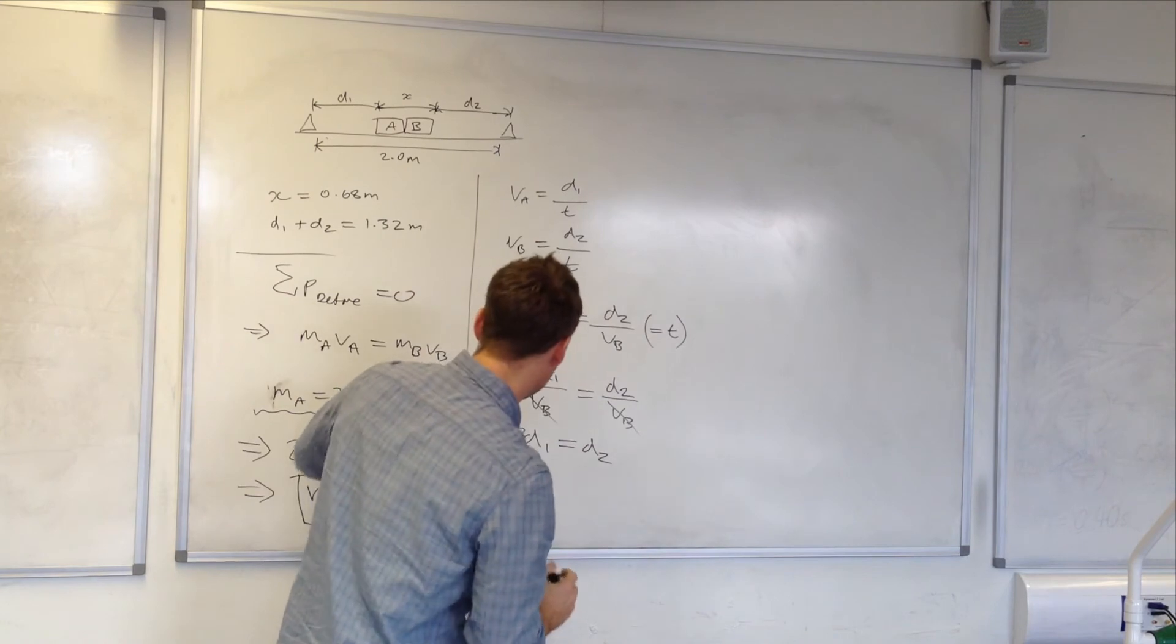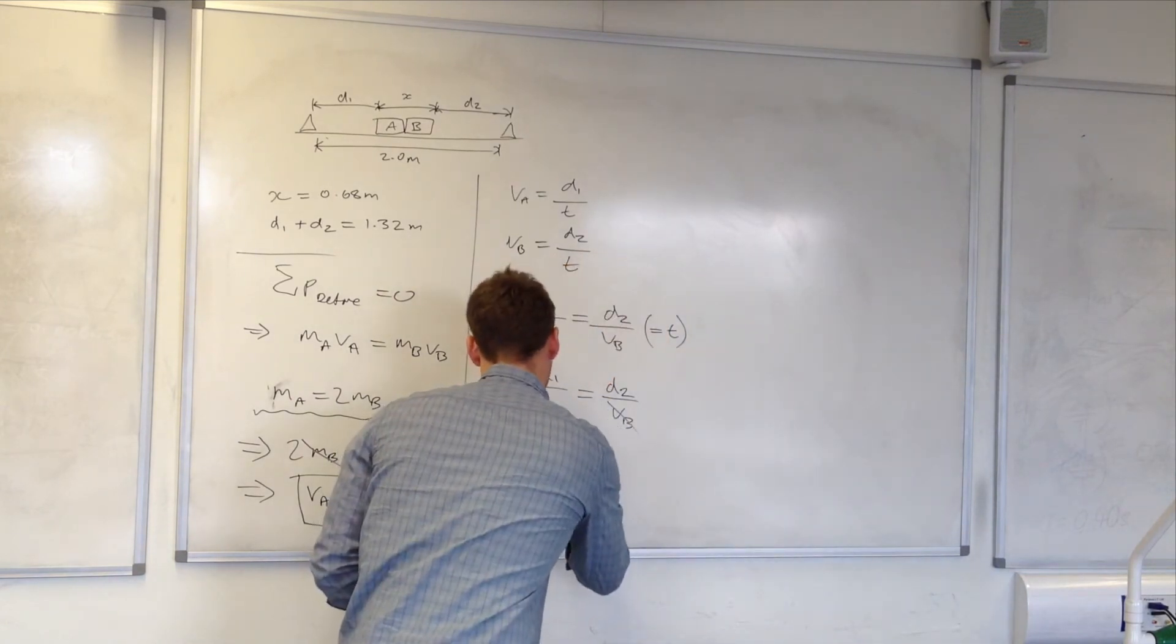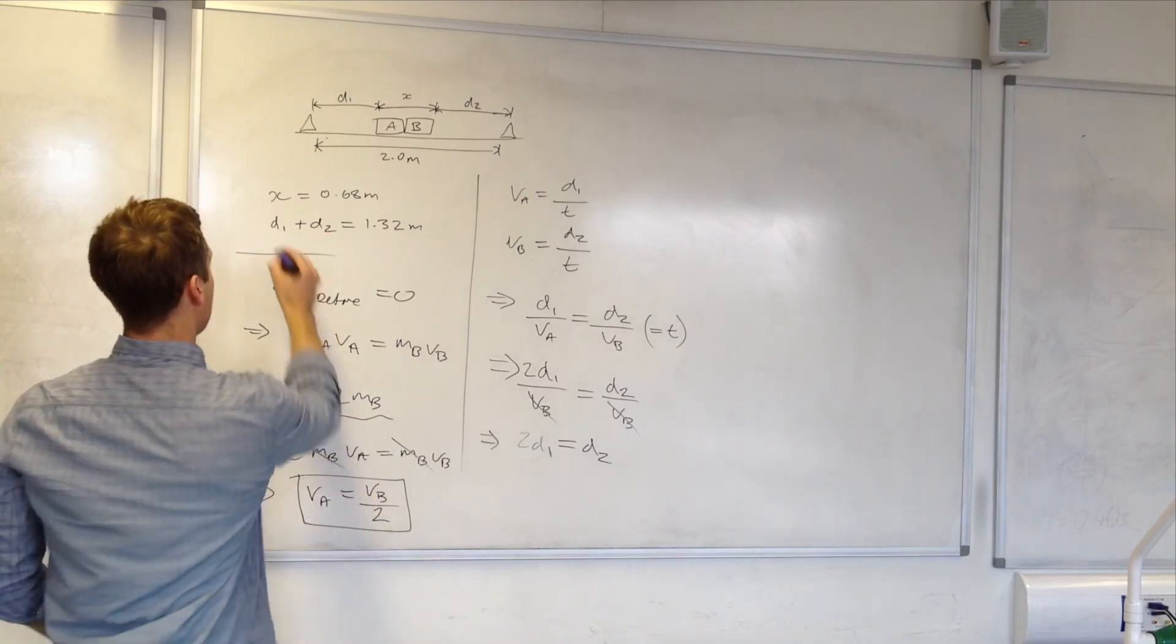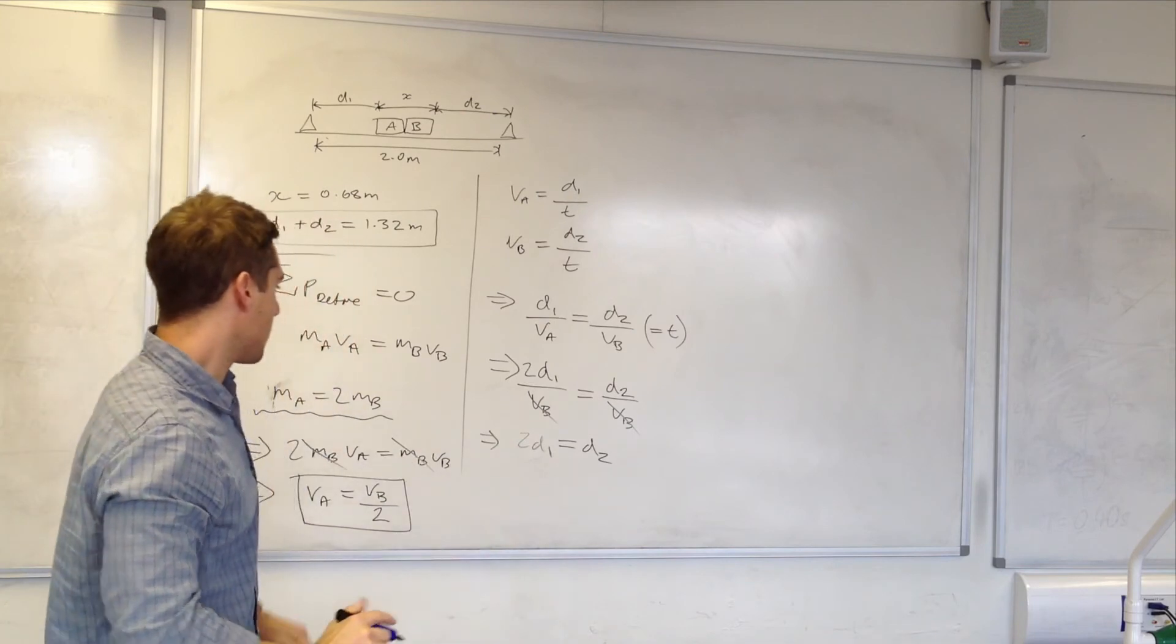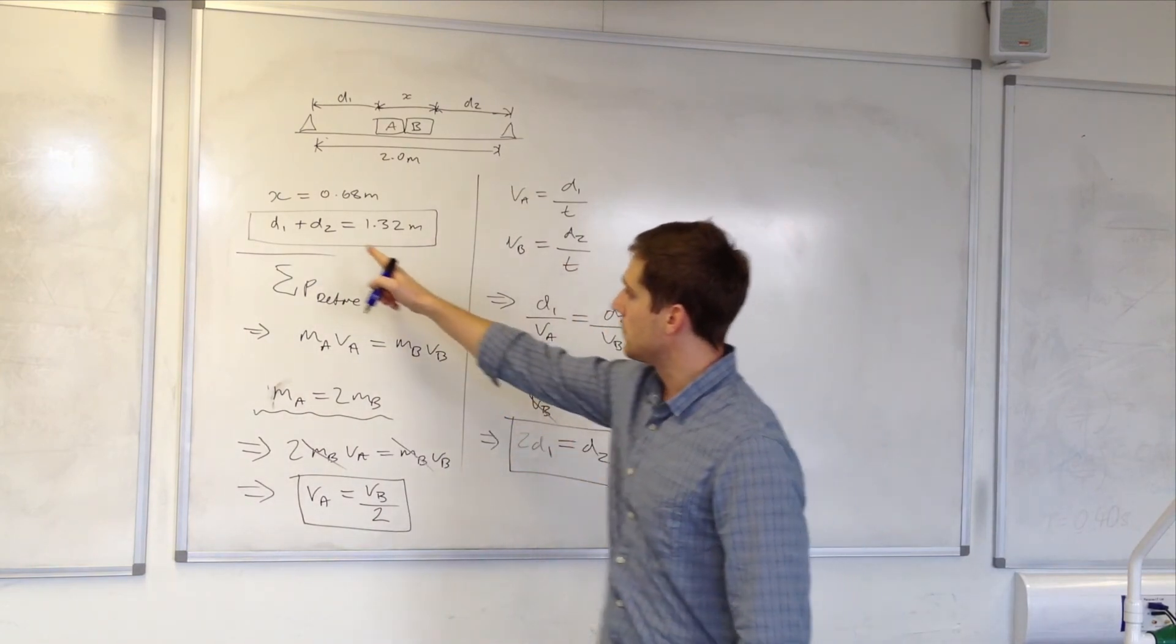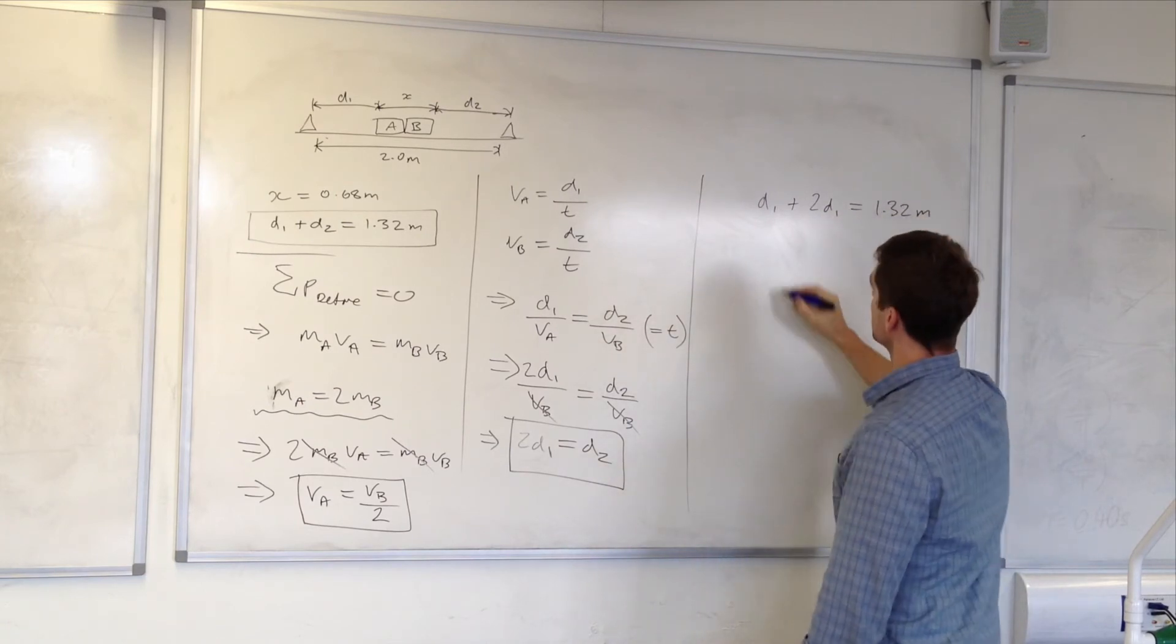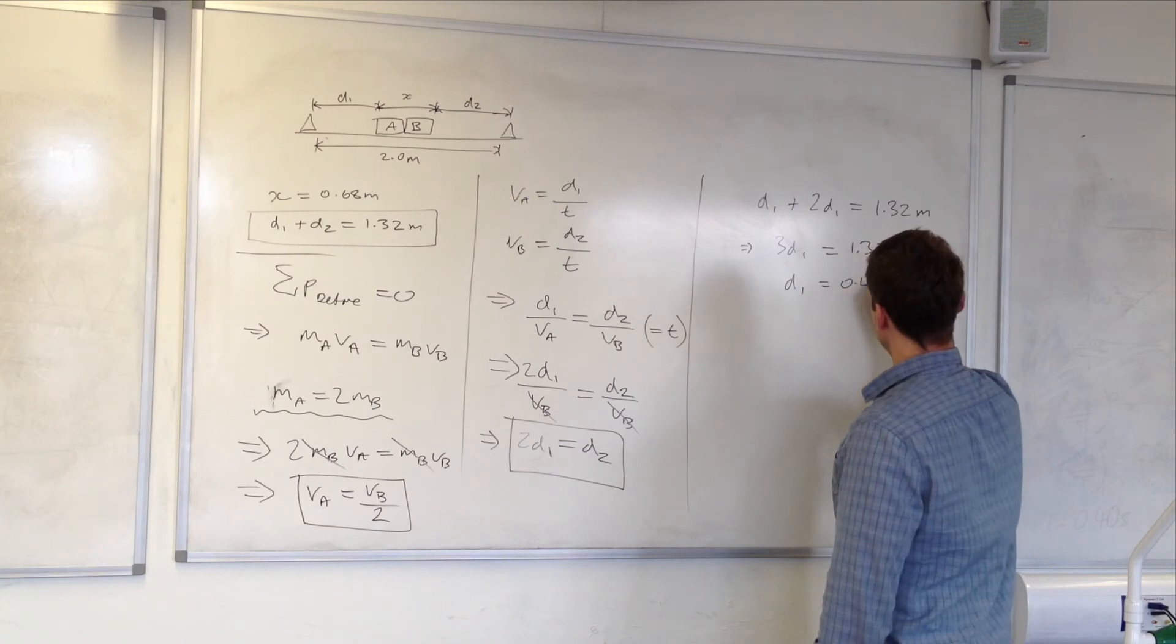So now I have a relationship between the distances and I have another equation for the distances up here. So I will substitute in for D1 with that relationship. So D2 equals 2D1. I'll substitute that in there. So it will be D1 plus 2D1 equals 1.32 meters. So 3D1 equals 1.32. D1 is 0.44 meters.